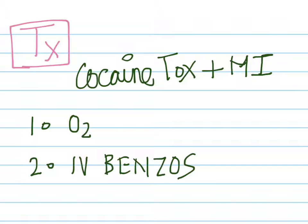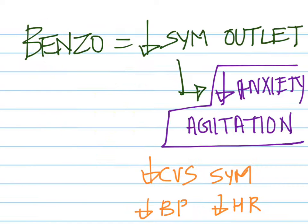Any person who presents with cocaine toxicity and with MI — like chest pain — what is the first thing we do? Obviously give them oxygen. But in addition, you want to give them IV benzos. How do benzos act? It is also a novel concept that in cocaine toxicity, IV benzos are the medication of choice. Benzos decrease the sympathetic outlet, and most of us know these patients are also agitated and anxious.